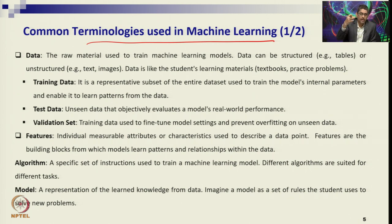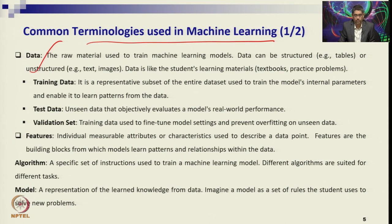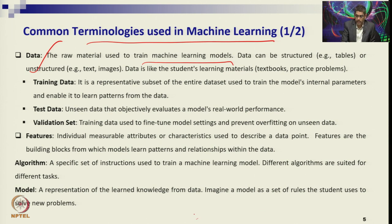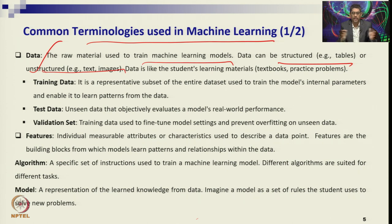The first important terminology is data — it is the source, the oil of your model and training system. Just as any manufacturing system needs raw material, here you need data to train the machine and the model. That data can be structured in tabular format with columns effectively given, or it can be unstructured — like text, images, or different types of comments on Facebook, Twitter, or social media. You can classify them using machine learning and AI techniques.